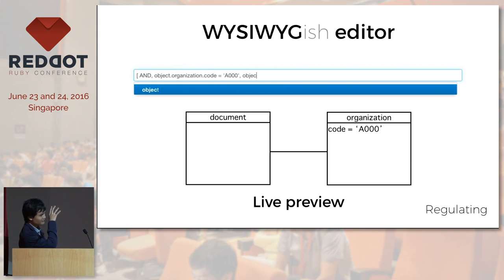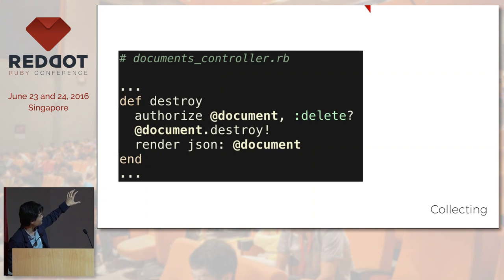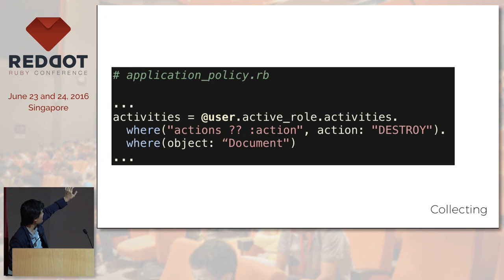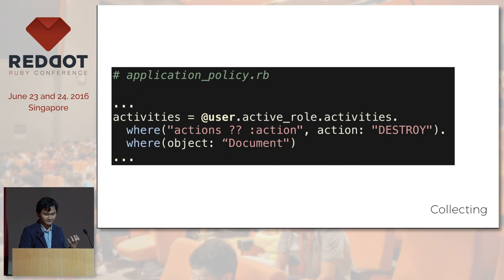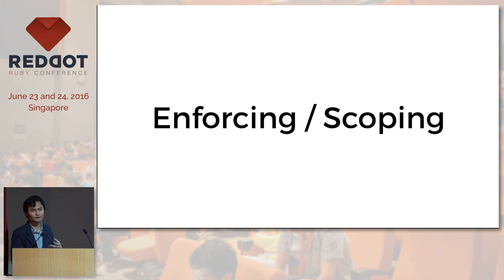Our implementation is something like this — you have a query DSL generator, and then a live preview at the bottom of the query generator. After that comes the collecting part. In Pundit, it will go to an application policy, and I put something like this so it can collect all the activities about the document — checking whether the user has activities related to destroying the document. After we collect all the activities comes the evaluating part, where we simply parse the conditions tree already created in the DSL.